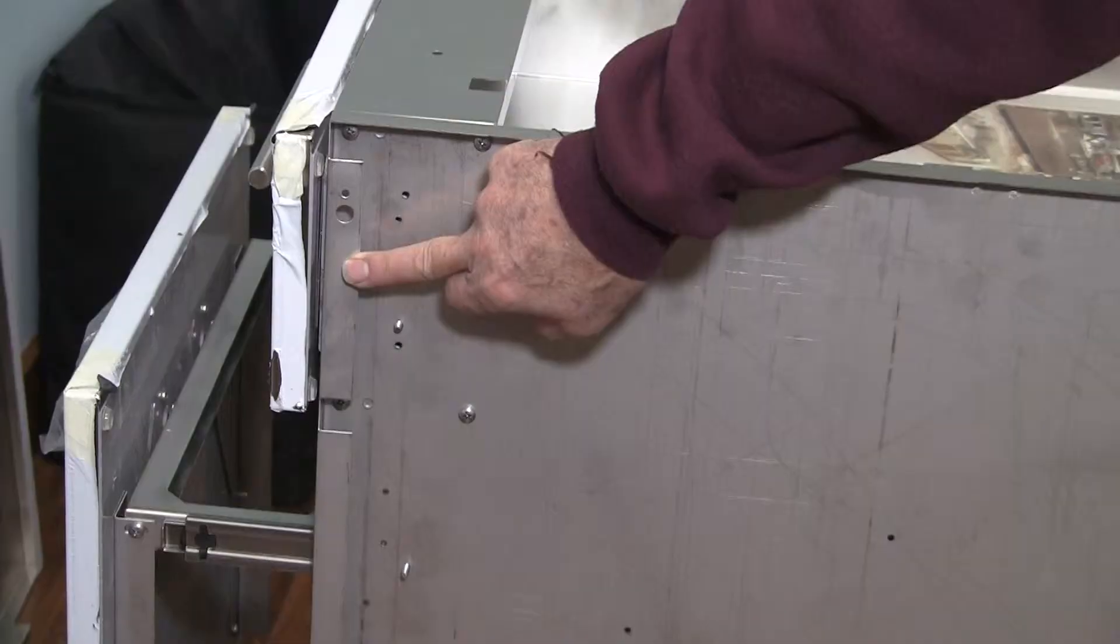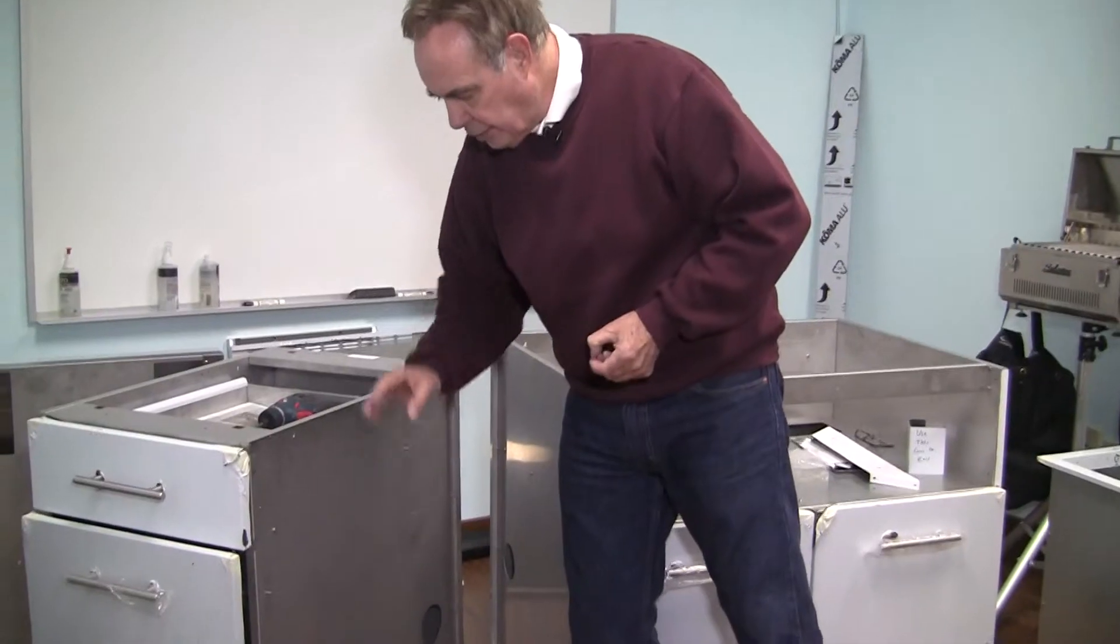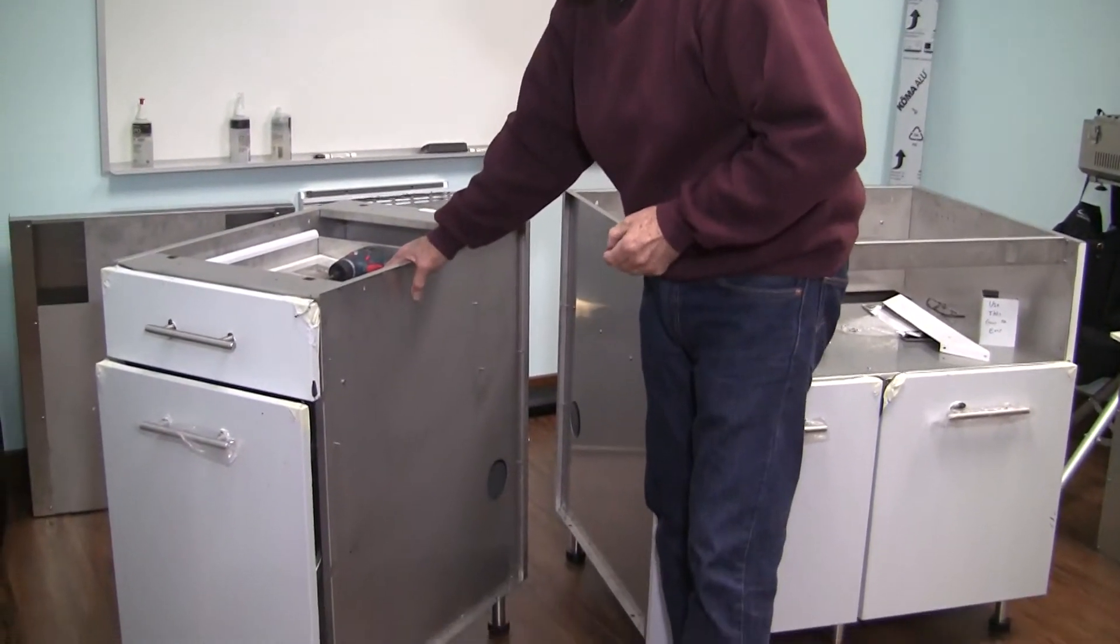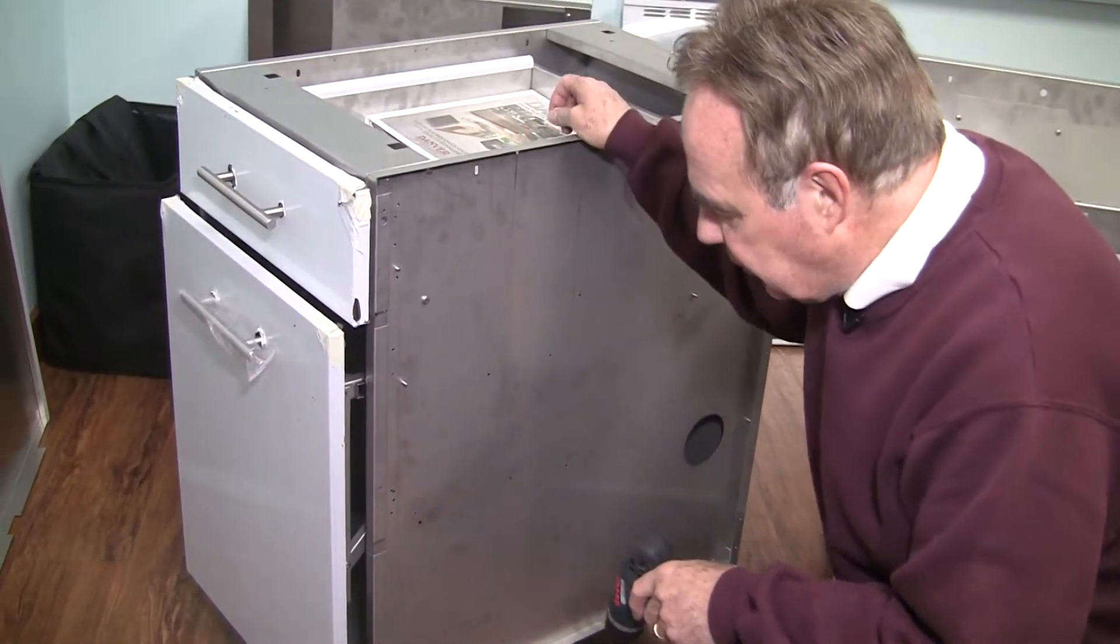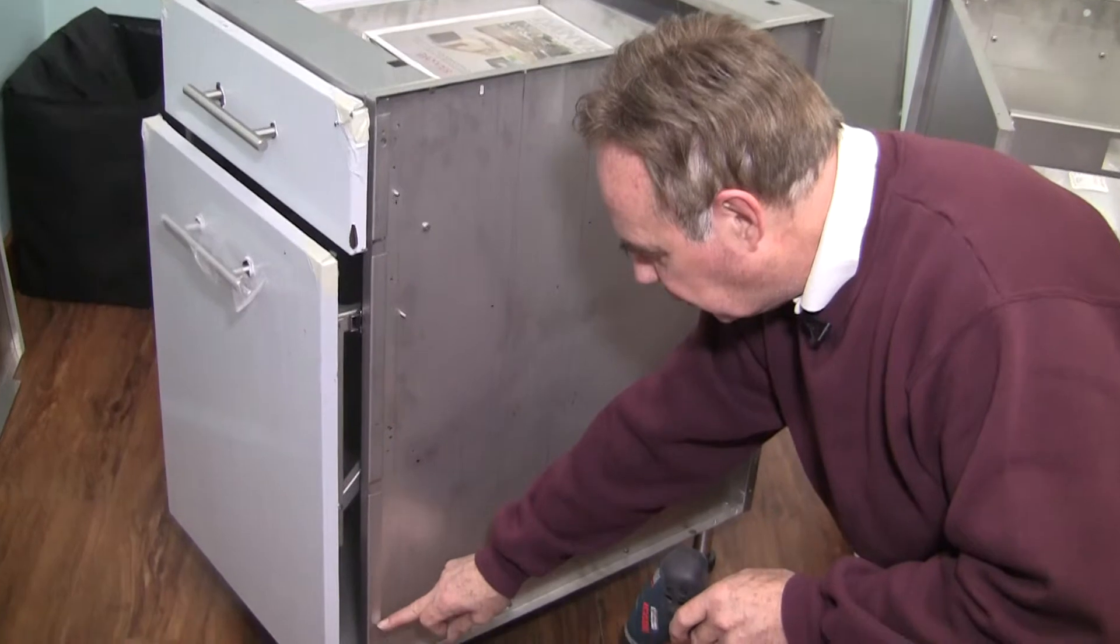On the right wall of every cabinet is a flange. At the bottom, there are two screw holes. Start a screw at the second of the two holes or the top.